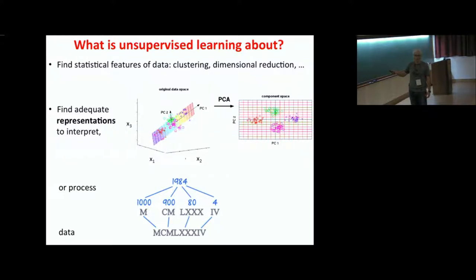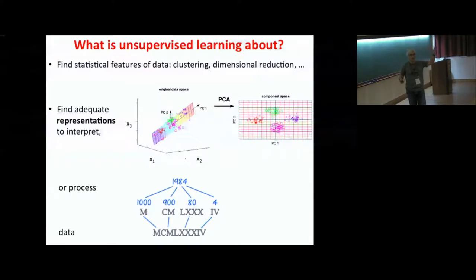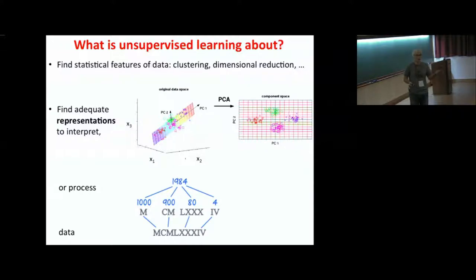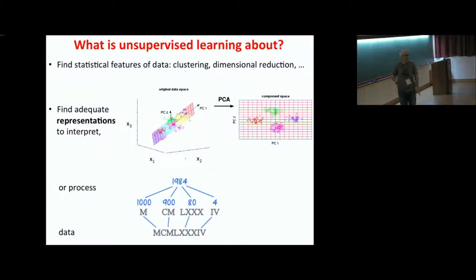There is another goal: a good way to process the data. Consider Roman numerals as a trivial example. If you want to write 1984 in Roman numerals, the problem is that it's an inadequate — though precise — representation. There's a one-to-one mapping, but it's very inefficient: you have to invent new symbols each time you go from 10 to 100 to 1000. In the usual way of writing numbers, just by counting digits you immediately know the order of magnitude. That doesn't work at all with Roman numerals — it requires a huge decoding effort. So it's a very bad representation.